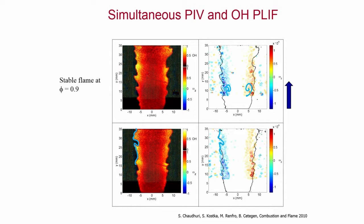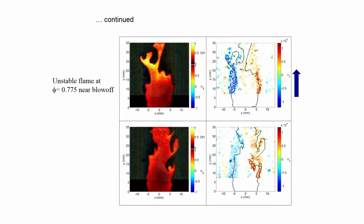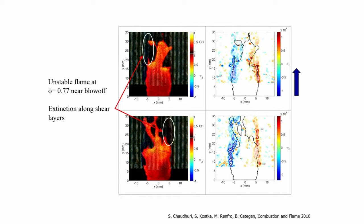The flame edge, extracted by maximum gradient of OH using algorithms like Canny edge detection, essentially envelops the Kelvin-Helmholtz vortices — the vortices are inside the flame edge. As blow-off is approached, large regions of flame holes are formed, and now the flame edge overlaps with the Kelvin-Helmholtz vortices. You invariably see this flame edge overlapping the Kelvin-Helmholtz vortices as blow-off is approached.